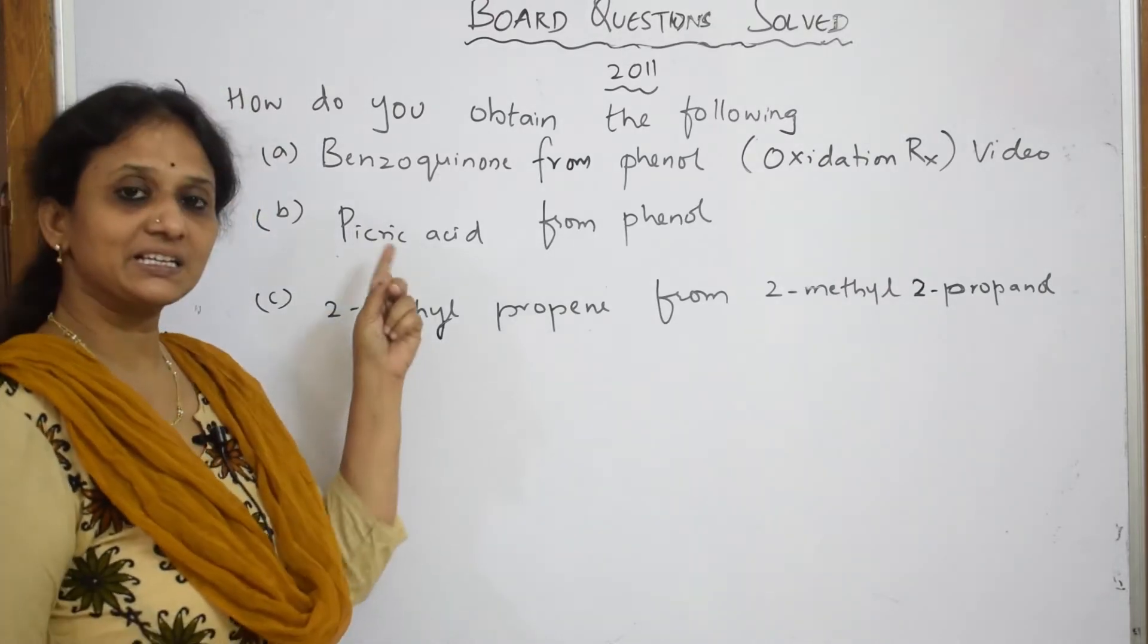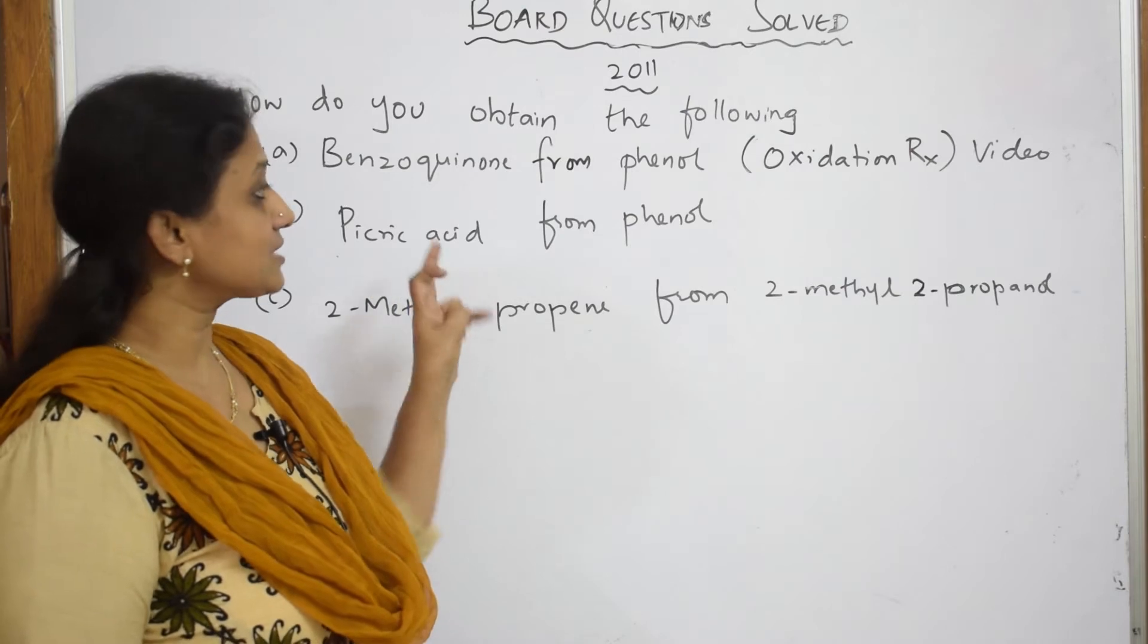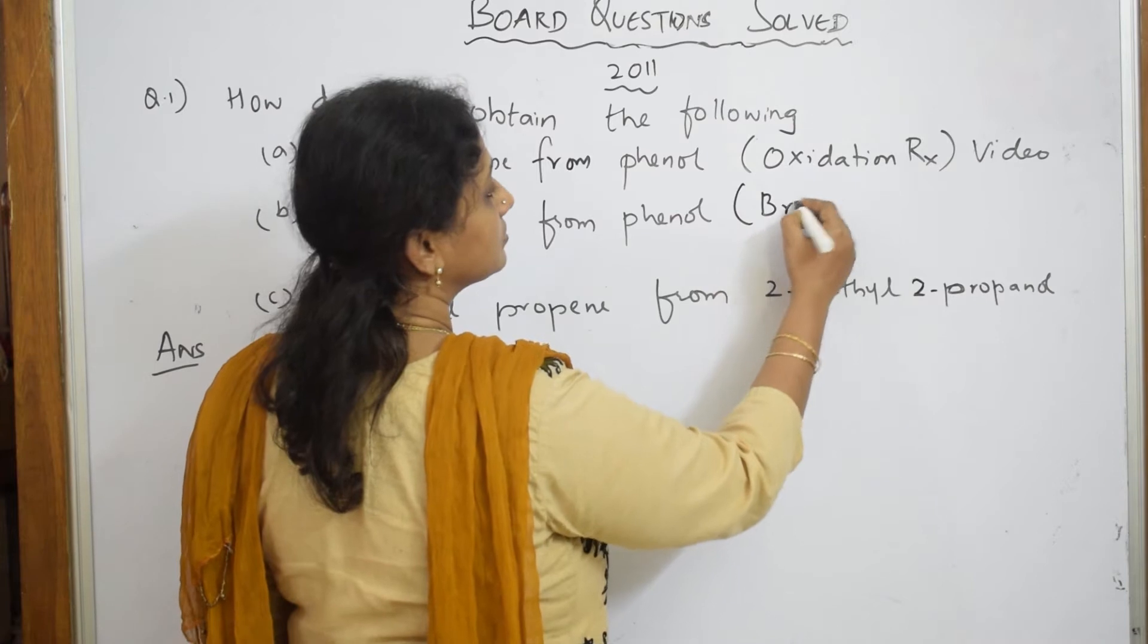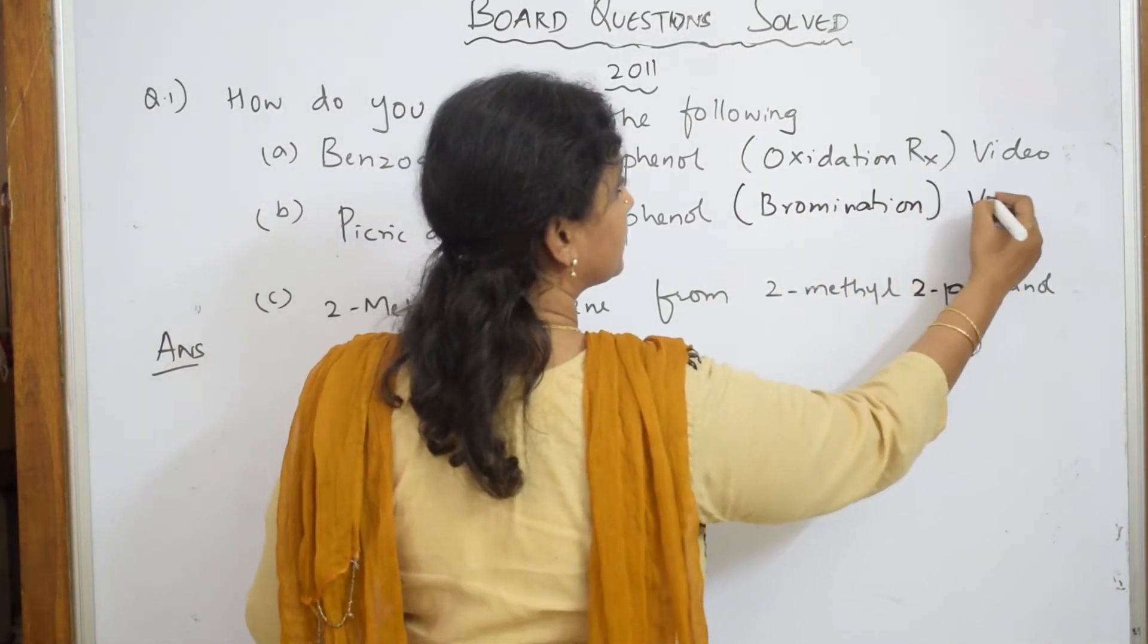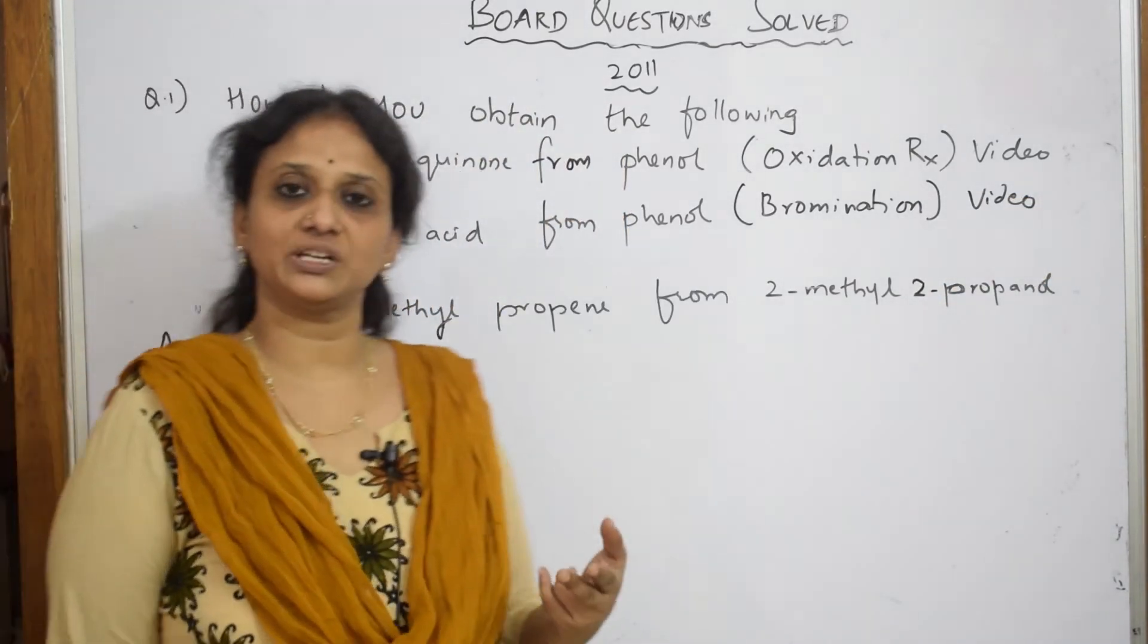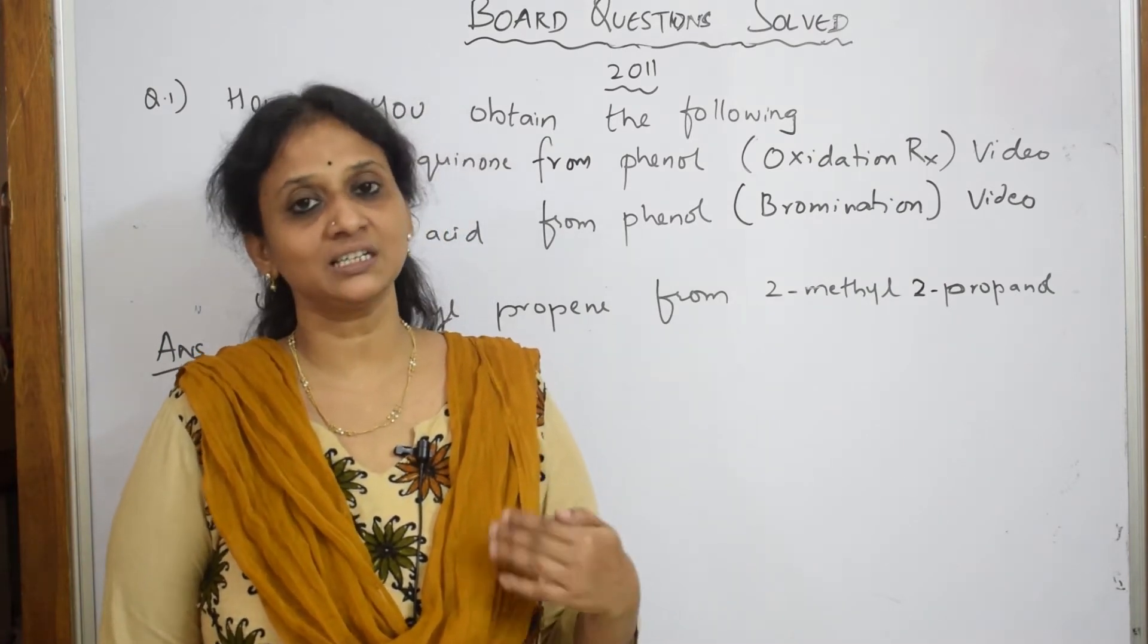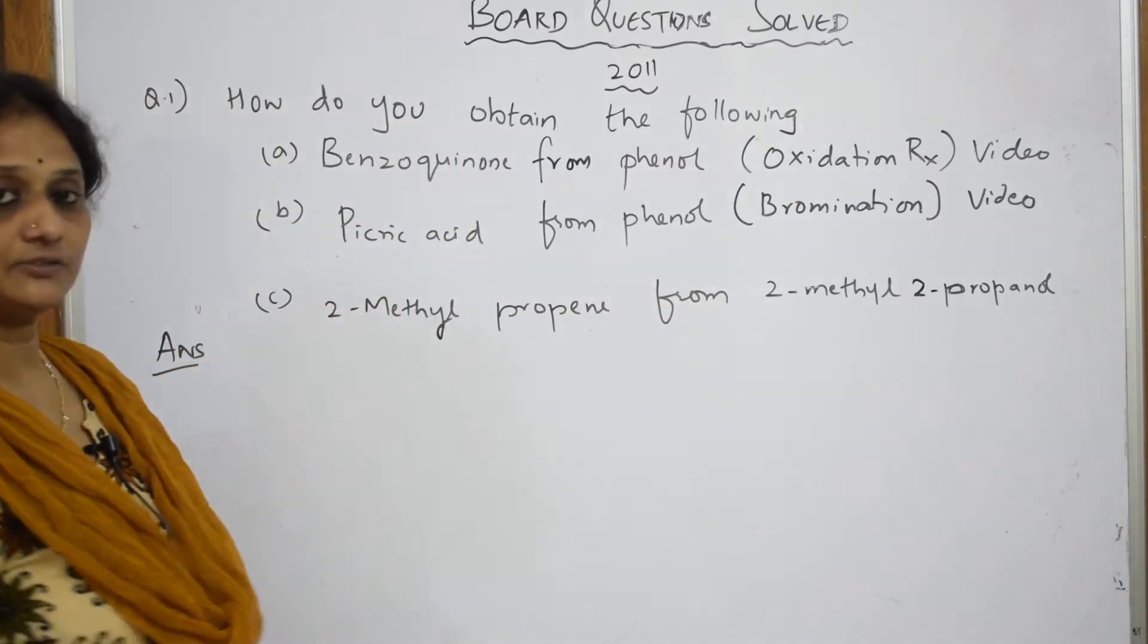After that, picric acid. Picric acid is nothing but 2,4,6-tribromophenol. So picric acid from phenol I have done in a video called bromination reaction. Bromination of phenol I have done this in a video, please watch that. Bromination of phenol, I have done two brominations: bromine with bromine water and bromine in carbon disulfide, polar solvents and non-polar solvents. So please watch that video for that question.